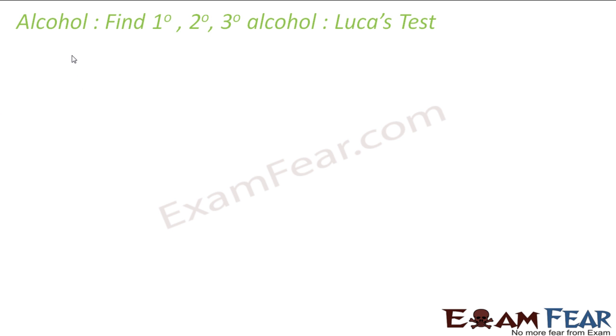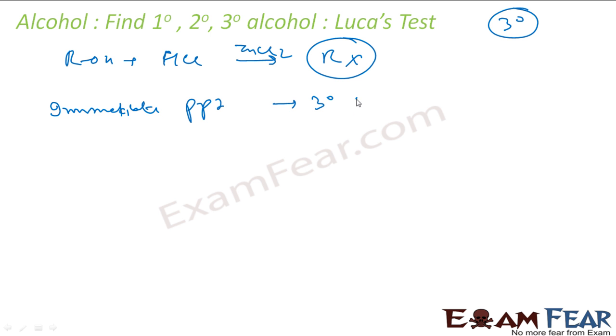The next is the Lucas test. We have already learned this. Lucas test, what you do? You take alcohol, you react this with HCl in the presence of ZnCl2. You get RX. Now the time of appearance of this RX decides whether it is primary, secondary, or tertiary. Which I told that 3 degree is the fastest. So if it is immediate, immediate precipitation, I will say it is 3 degree alcohol.